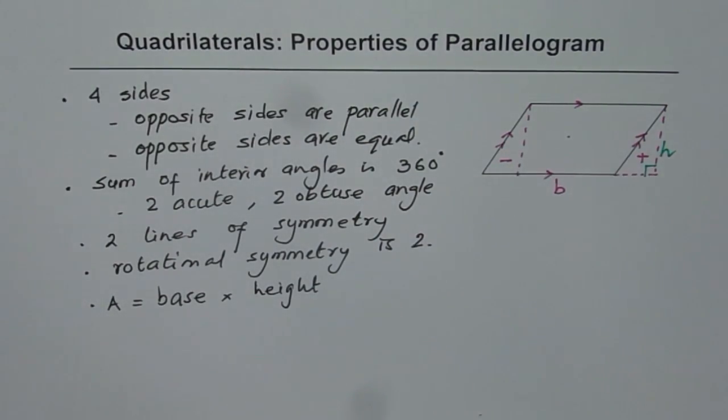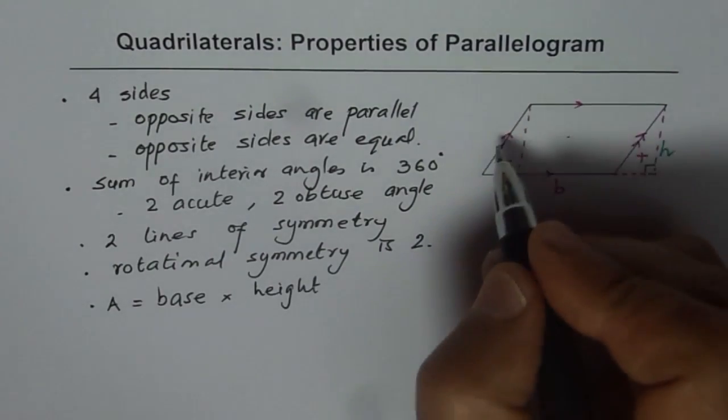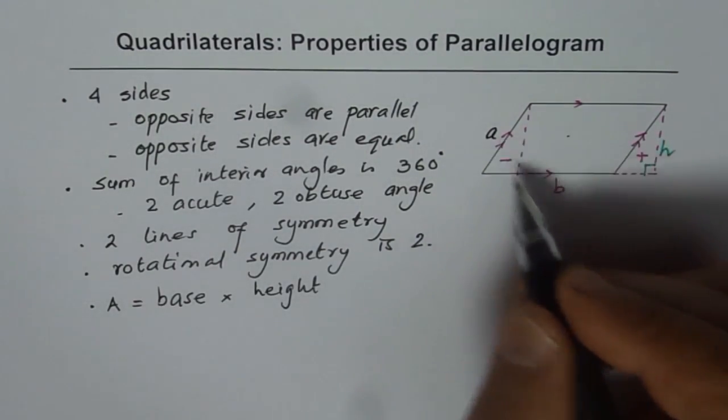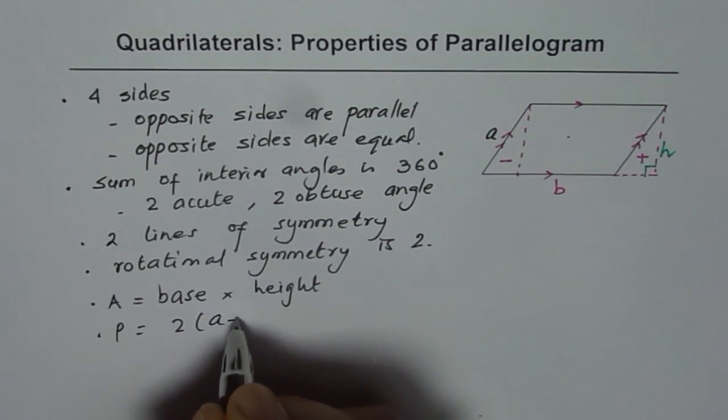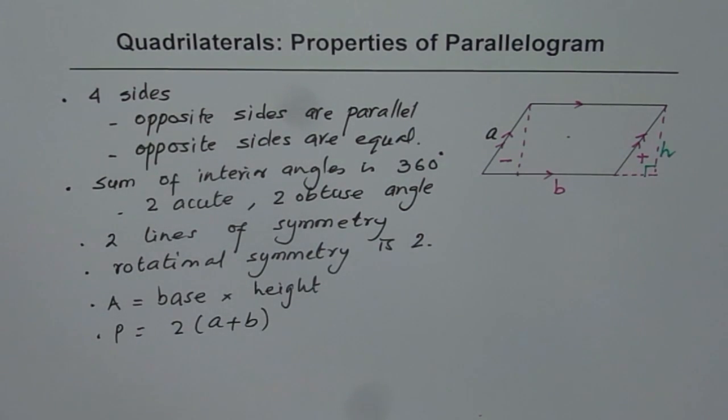And for perimeter you have to add all the sides. So if the other side is a, then you know perimeter is two times a plus b. And that is about the parallelogram.